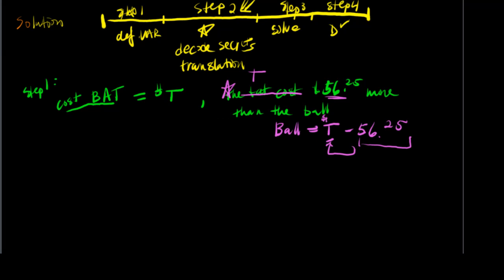Now the second translation. Let's take a look at what the second translation requires us to do. It says the total cost for baseball and bat was $76.25. Alright, so let's pick our color. Total cost, that means $76.25 is the total. Total means the ball and then plus the bat.